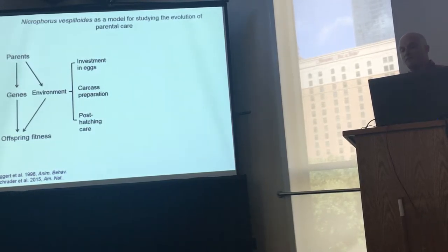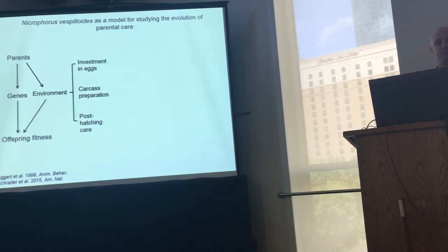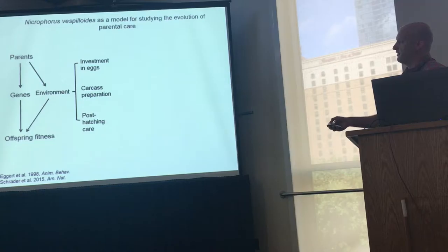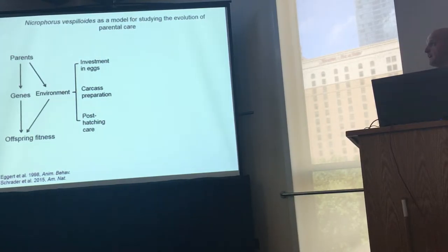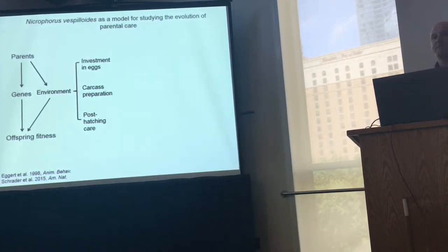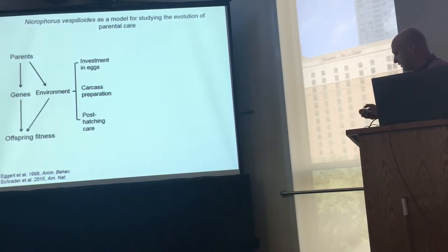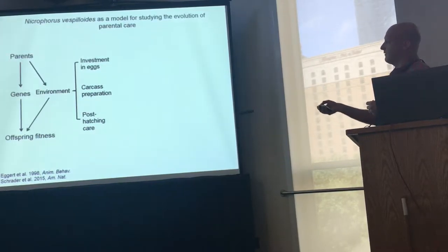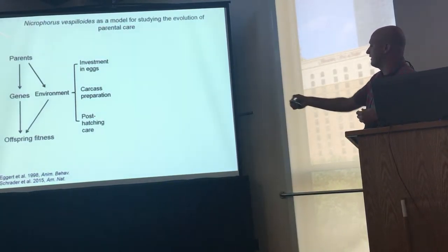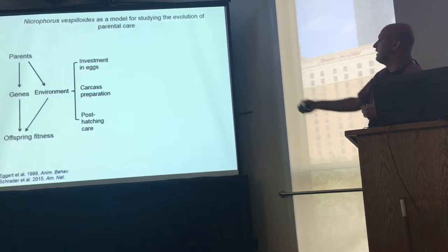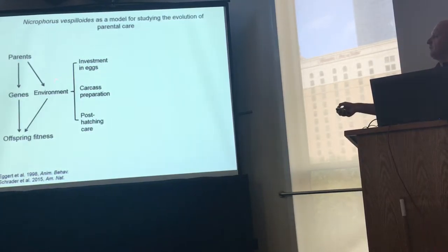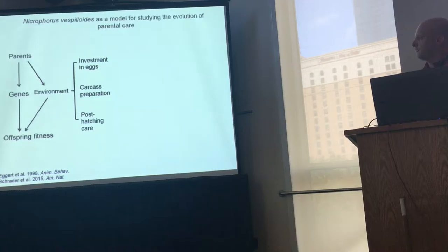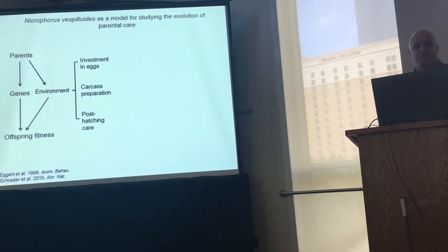Parent burying beetles can influence the fitness of their offspring through both the genes they transmit as well as the environments they provide for their offspring. There are three major environmental components that parents determine: they can influence the environment through investment in eggs, also through carcass preparation, as well as through post-hatching parental care.